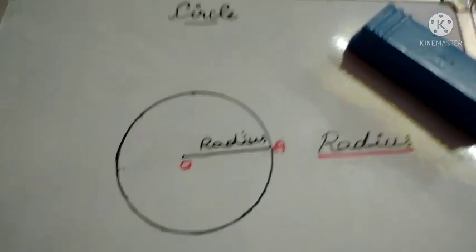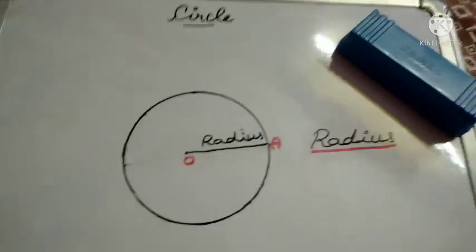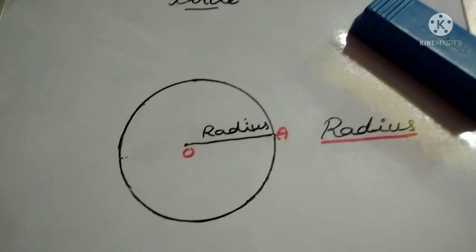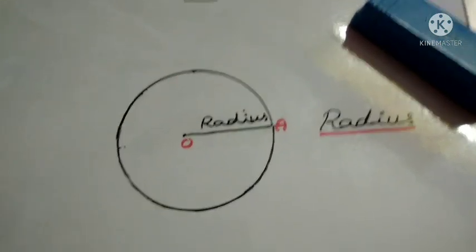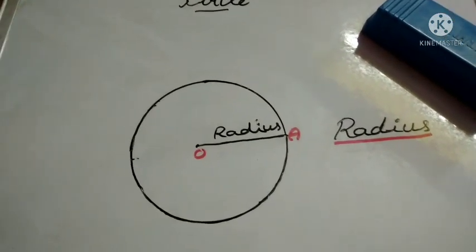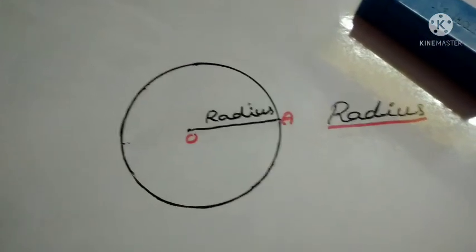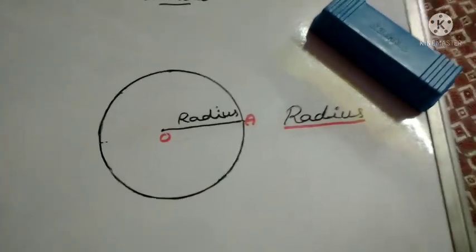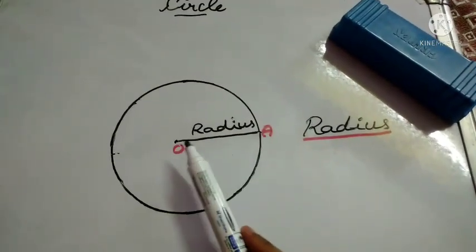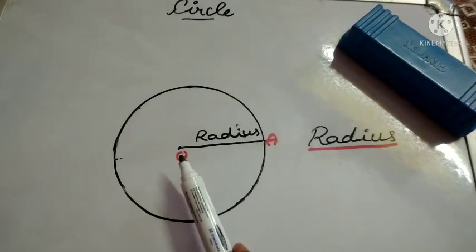Hello friends, welcome to my channel. Today I am going to teach you the parts of a circle. First, we are going to learn what is the center of a circle. The fixed point is known as the center of the circle.